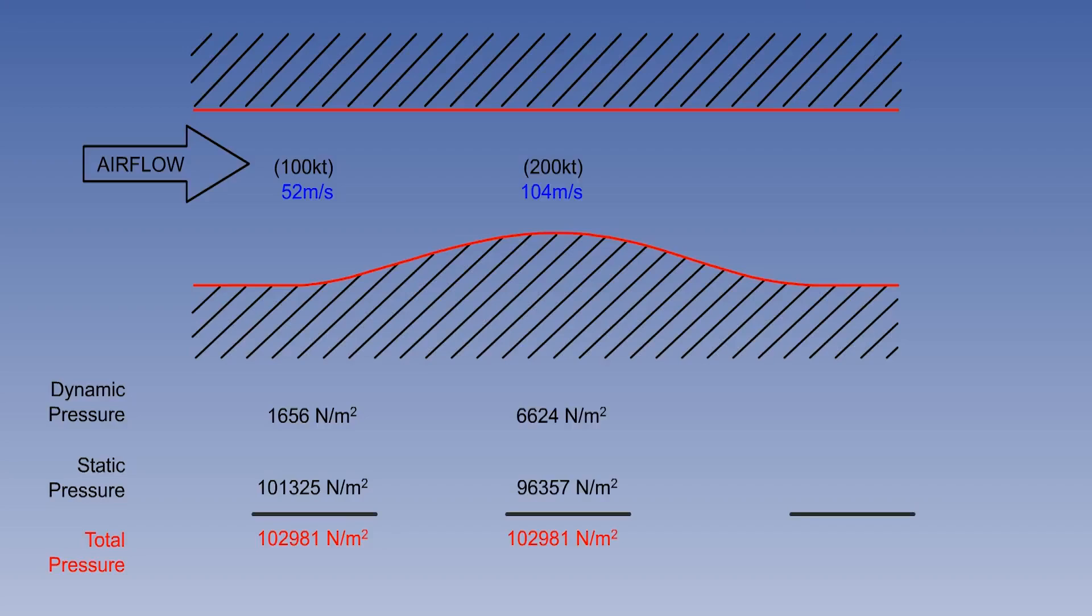Because the velocity of the air flow at the throat has doubled, its dynamic pressure has risen by a factor of 4, and the static pressure has decreased. But the total pressure, the sum of static and dynamic, has remained constant.